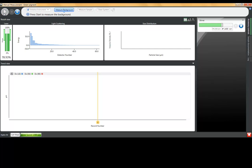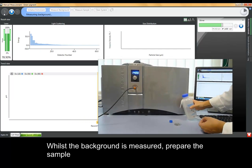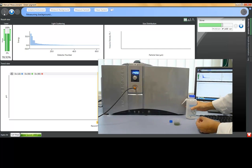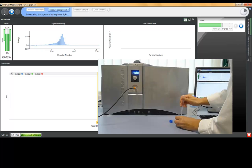We can then take the system through its alignment and background. And while the background has been measured, we can prepare the sample. Here the pigment has been dispersed with a little bit of surfactant and water.